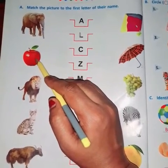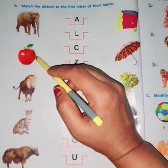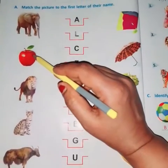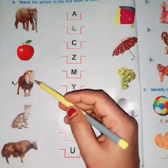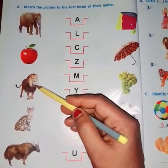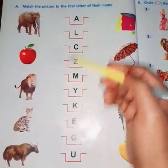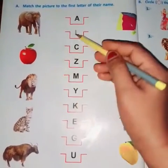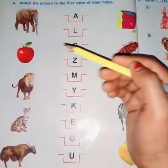And what is that? That is an apple. What is the first letter of apple? A. Find out A — here. Match it. A for apple. And what is that? That is a lion. What is the first letter of lion? L. Where is L? L is here. So you have to match like that. L for lion.